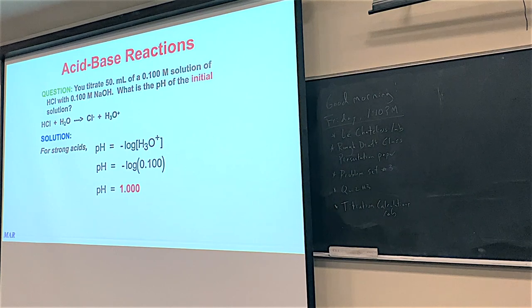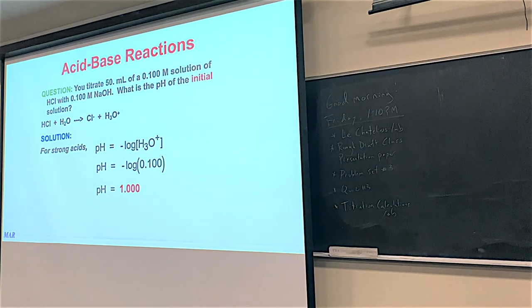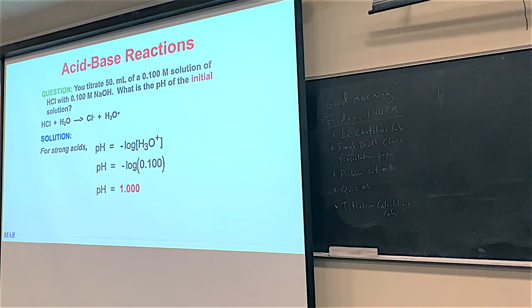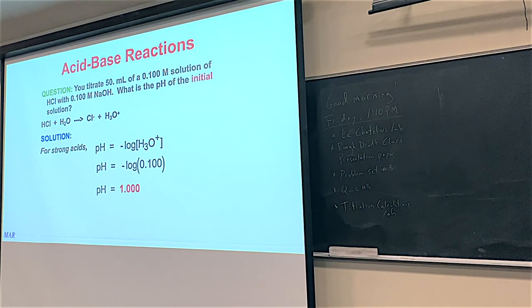For what it's worth, in the lab on Friday you used 12 molar HCl. If you take minus log of 12, you get an even more acidic number. That's why I really wanted you to be careful with that acid — we're dealing with powerful chemicals. pH of 1 is very acidic, but 12 molar HCl is even more extreme.